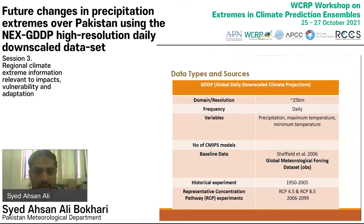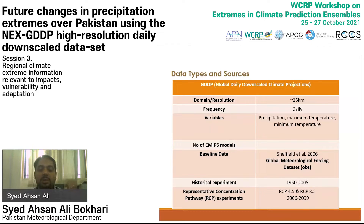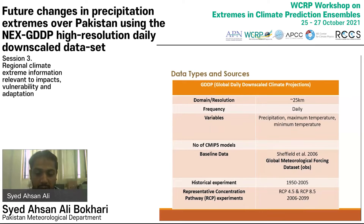The dataset we used is the Global Daily Downscaled Climate Projections (NEX-GDCP) dataset. The fine resolution of this data is 25 kilometers and it is available at daily time frequency. There are three parameters available — precipitation and temperatures. Around 22 CMIP5 GCMs are part of this dataset. The baseline data used for generation is the GMFD (Global Meteorological Forcing Dataset), with historical years from 1950 to 2005. For two scenarios, RCP 4.5 and RCP 8.5, daily data is available from 2006 to 2099.